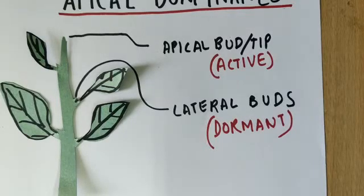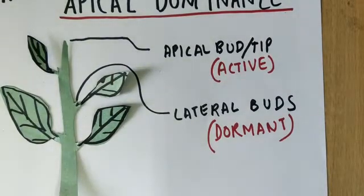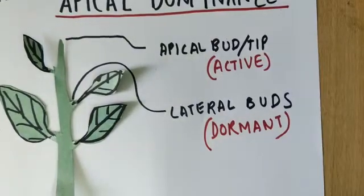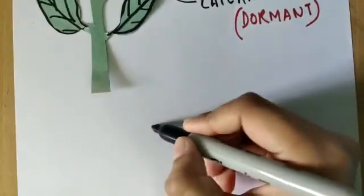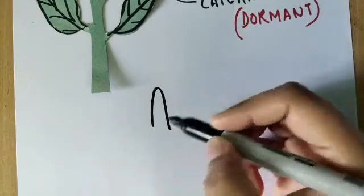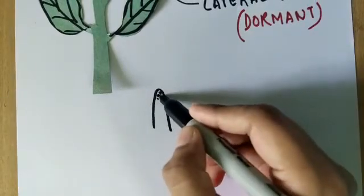Why does that happen? It happens because the apical bud is the part of a plant where auxin is produced. So if this is the apical bud, this is the production center of auxin.